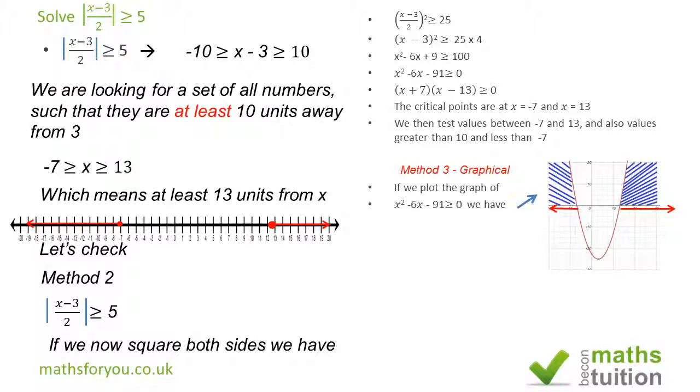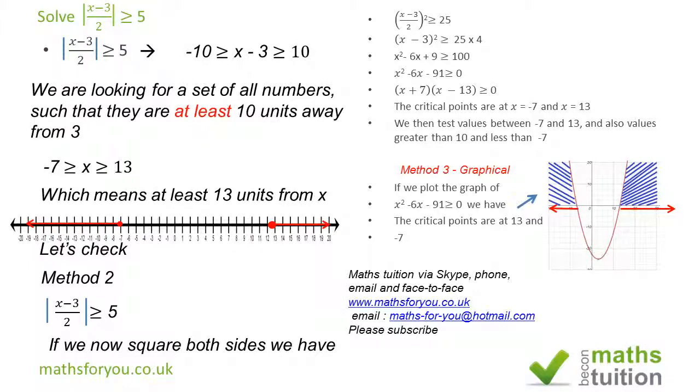In effect, that's going to be from there to there, and similarly, from there to that side. So those are the valid regions. And again, the critical points are at plus 13 and minus 7. I hope all that made sense. Please subscribe. Thank you for watching. See you again sometime. Bye-bye.